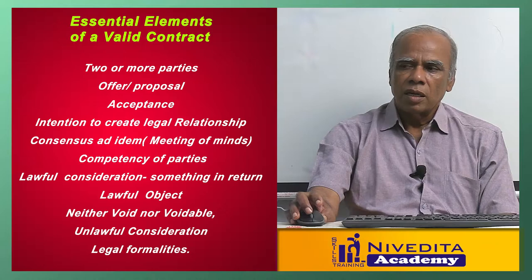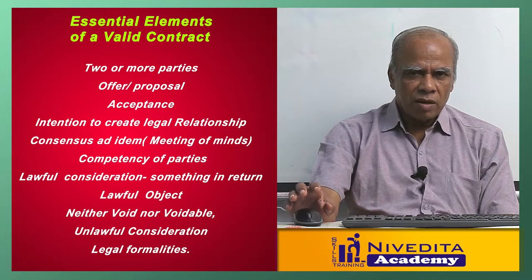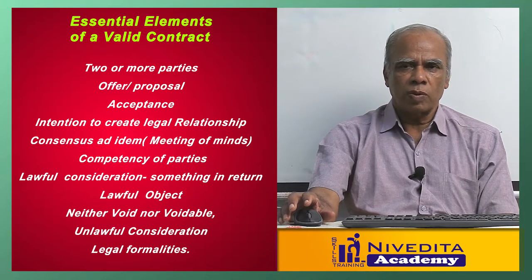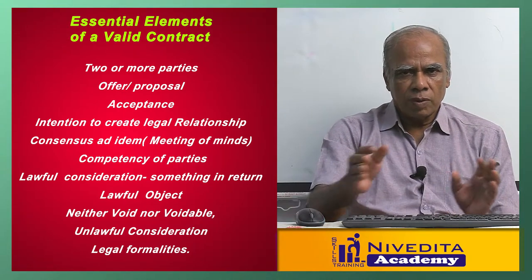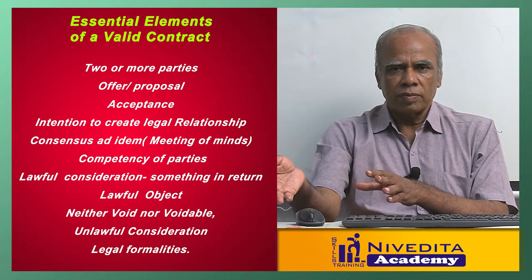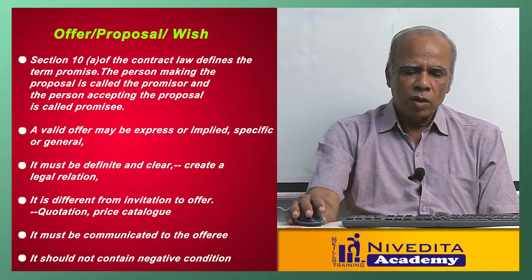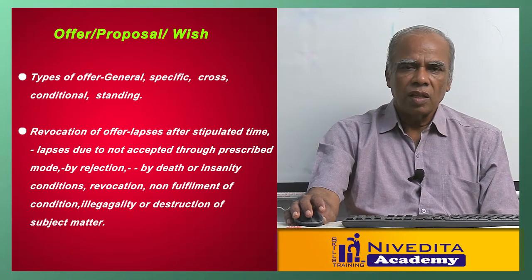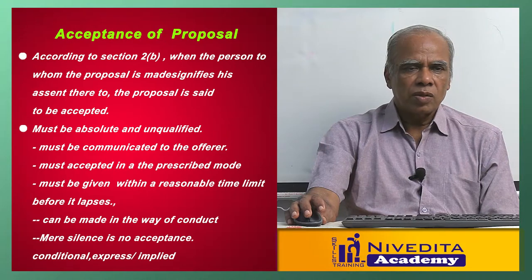What are the essential elements for a valid contract? To make a contract, there must be at least two parties — minimum two parties. In one party there may be more than one person, and in another party also there may be more than one, but there must be at least two parties. One party should propose and offer, and another party is the offeree who should accept.